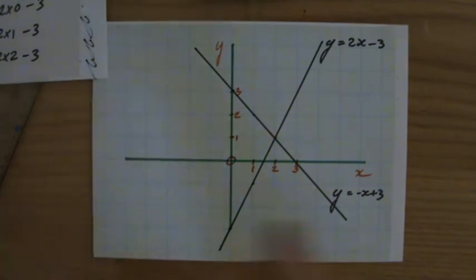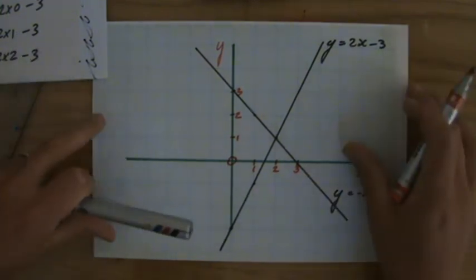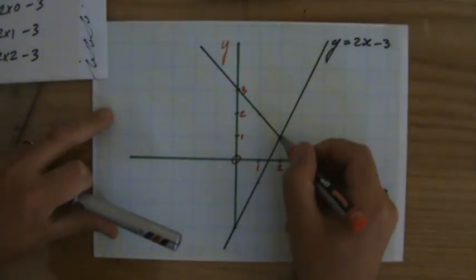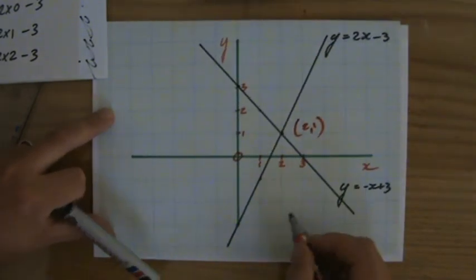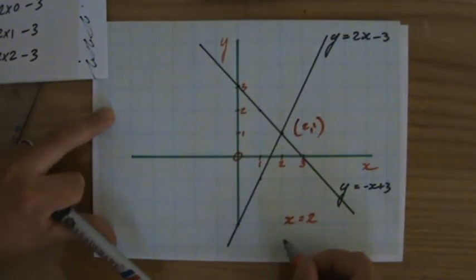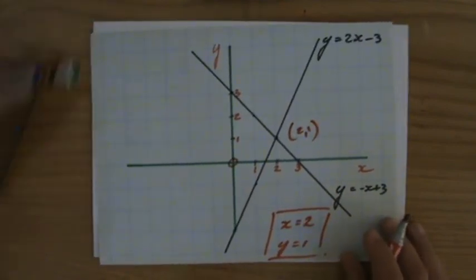Good. Now, for which x, for which y are both equations the same? That is what solving simultaneous equations is all about. Well, that is over here. The coordinate there is 2, 1. So your answer is, well, when x is 2, when y is 1, that is the solution to these simultaneous equations.